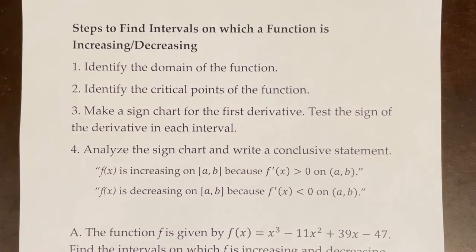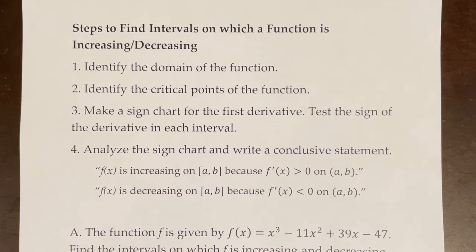These are the steps to find the intervals on which a function is increasing or decreasing. The first step is to identify the domain of the function. The second is to identify the critical points. Third is to make a sign chart for the first derivative and test the sign of the derivative in each of the intervals. And then lastly, you would analyze the sign chart and write a conclusive statement.